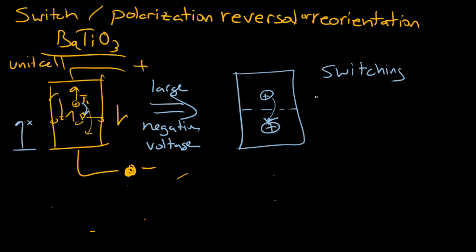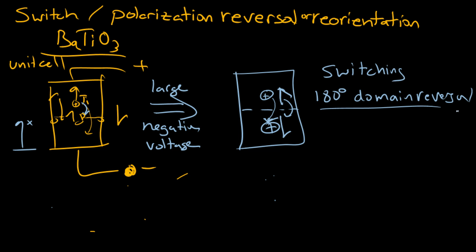This is called 180-degree domain reversal. The polarization vector used to go this way, but now it's switched and it now goes that way. The oxygens obviously move a little bit in the other direction as well. This is a quality of ferroelectricity, which we'll describe later. But first, I'm going to describe its effect on the material properties.